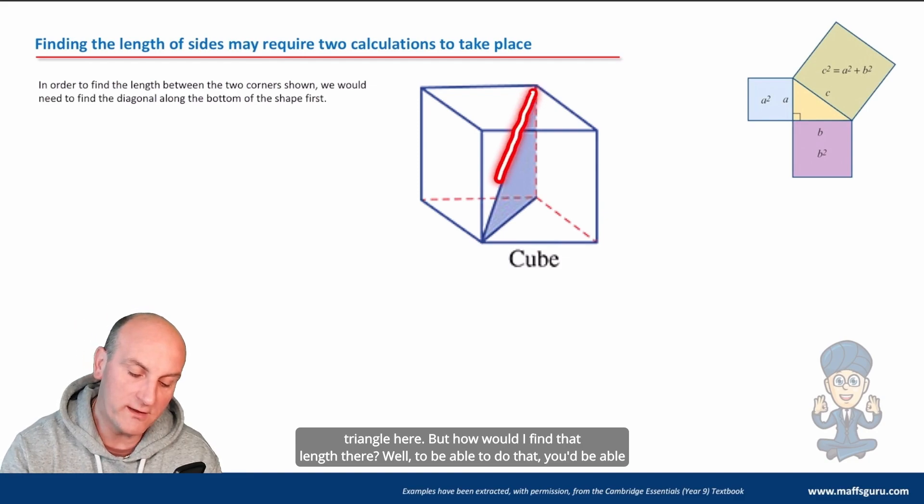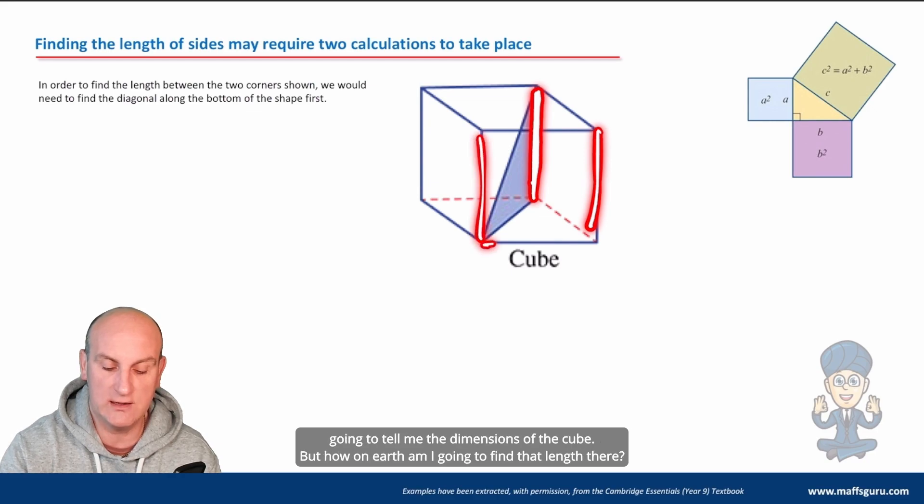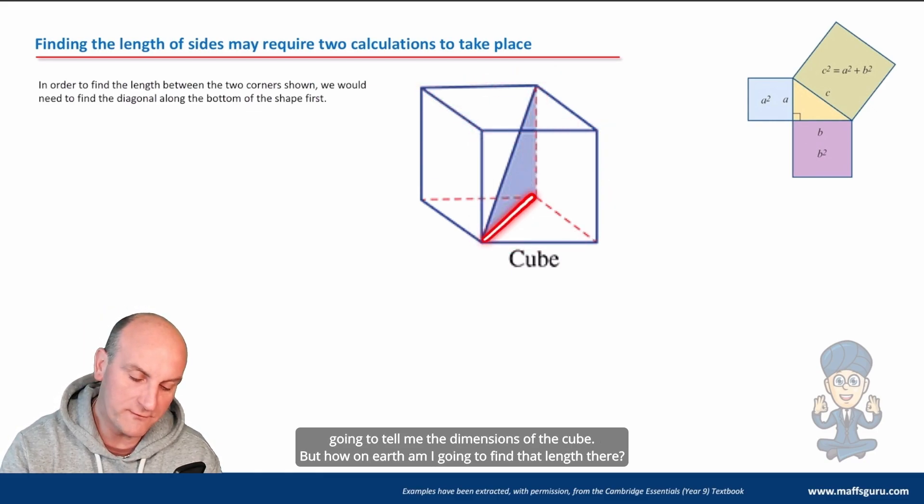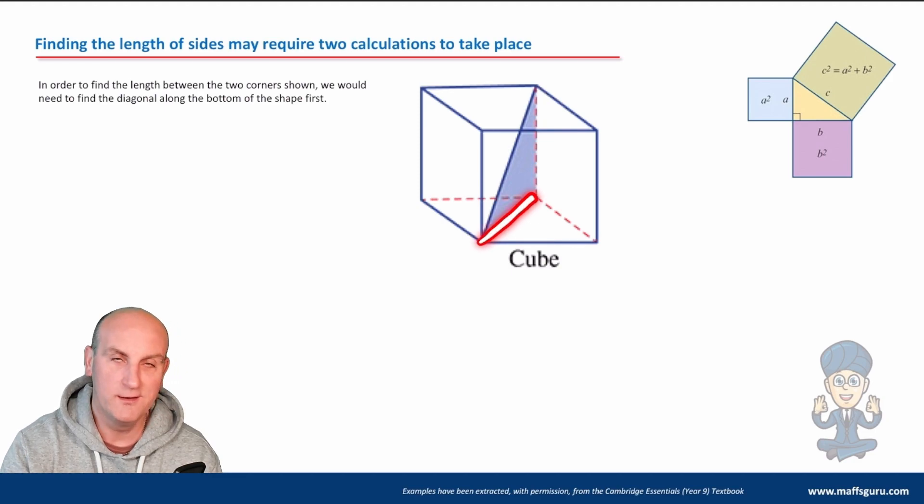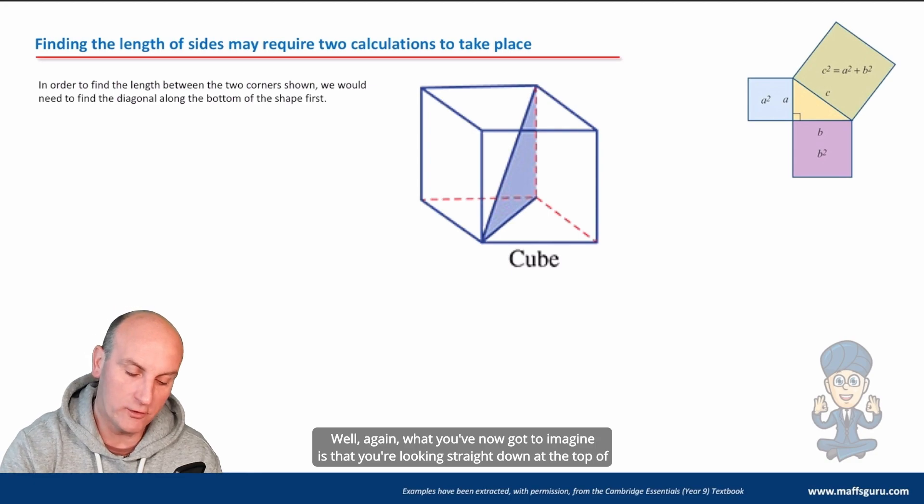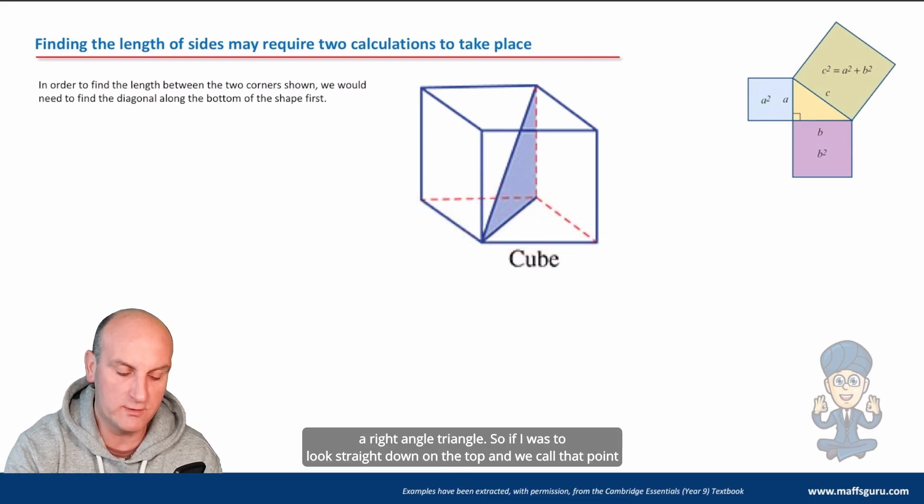But how would I find that length there? Well to be able to do that you'd need to know that height there yes which we would know because the chances are they're going to tell me the dimensions of the cube. But how on earth am I going to find that length there? Well again what you've now got to imagine is that you're looking straight down at the top of the cube and can you see here there is a slanted line.